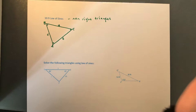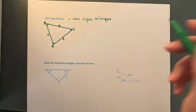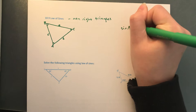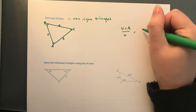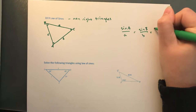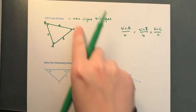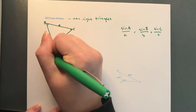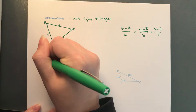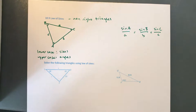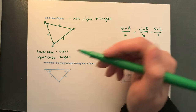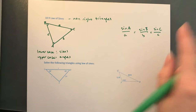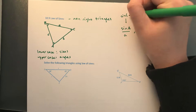Law of Sines is a proportion formula used to find missing sides and angles in non-right triangles. It looks like the following: sine A over a equals sine B over b equals sine C over c. These proportions come from this image. One thing to note: lowercase letters represent sides, and uppercase letters represent angles. So uppercase letters always represent angles, and lowercase letters always represent sides.